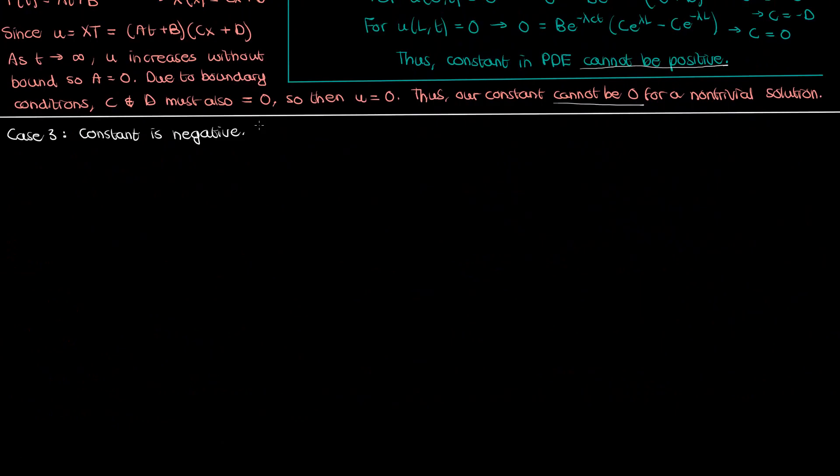Now when we have a negative constant we can write that constant as negative lambda squared since squaring any real number will always give you a positive value and so a negative of that square will always be negative which means our separated differential equation will look something like this.